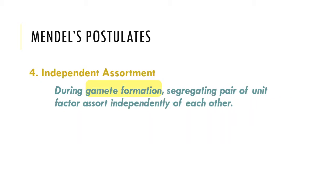Mendel's fourth postulate on independent assortment states that during gamete formation, segregating pairs of unit factors assort independently of each other. The law of independent assortment will be further explained when we arrive at solving dihybrid and trihybrid crosses. Since the laws of segregation and independent assortment are in conjunction with each other, a good understanding of the law of segregation will help you better comprehend what independent assortment is all about.